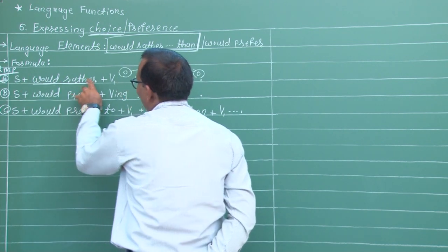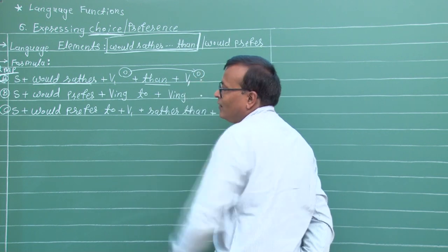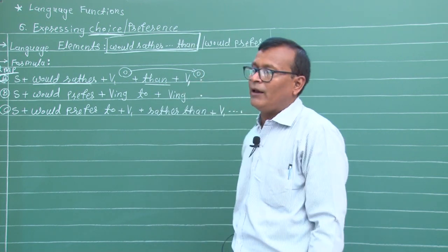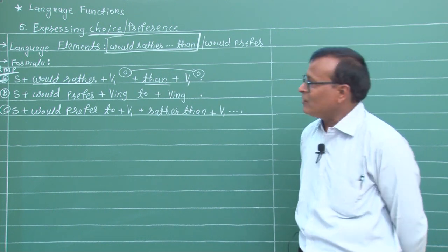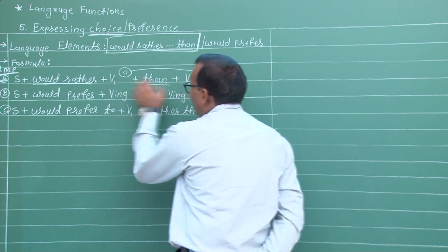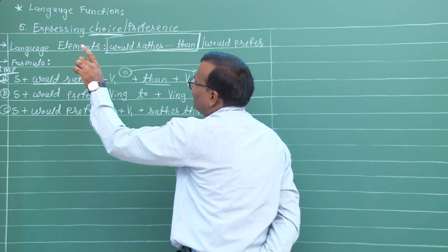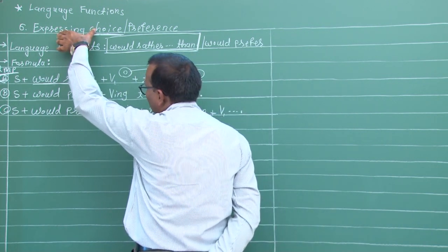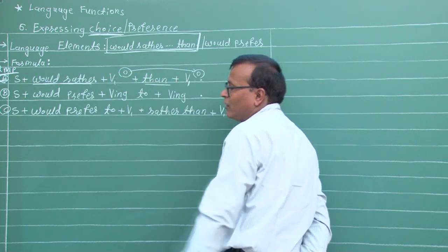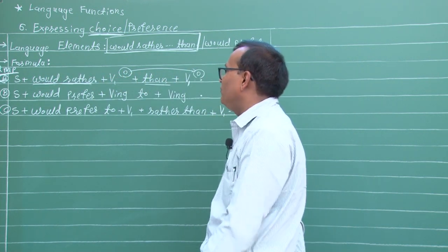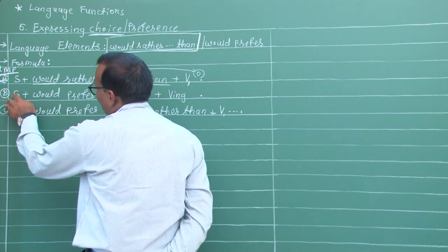ઉદાહરણ: 'I would rather eat an apple than a banana' - banana કરતાં apple ખાવાનું વધુ પસંદ કરું છું. આ વાક્યમાં 'would rather than' structure છે. Expressing Choice ટોપિક માં: Subject + Would Rather + verb + Than + verb - આગળ-પાછળ verb આવે.